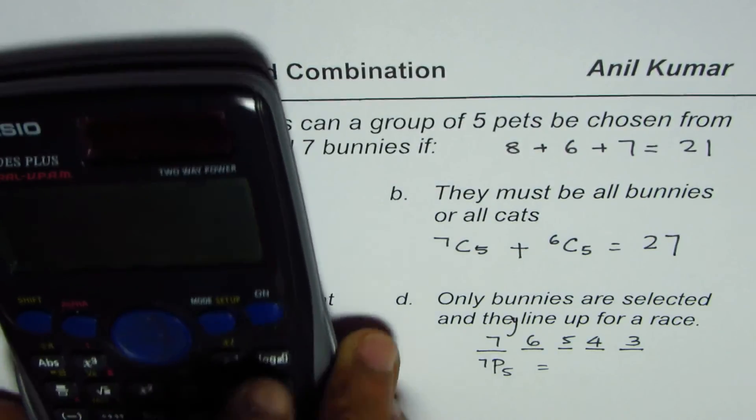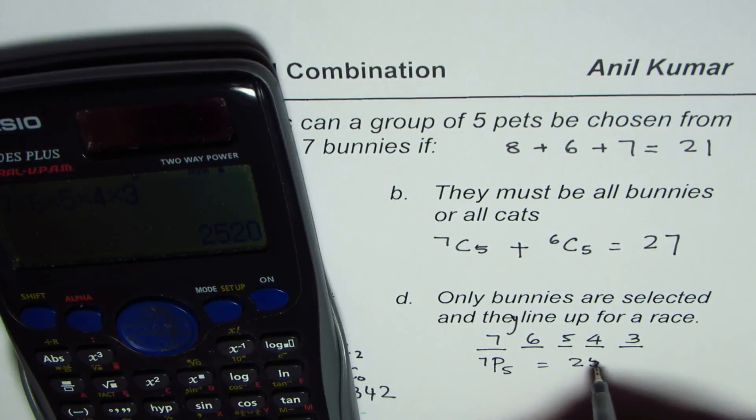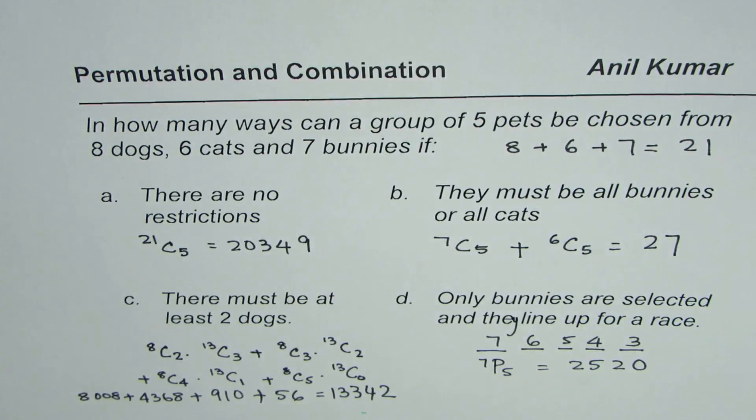Either way, so you could calculate the answer which is 7 times 6 times 5 times 4 times 3 and that gives you 2520 as your solution. So you can use counting principles or you can use permutation. In this particular case, order matters and so we have used permutation.